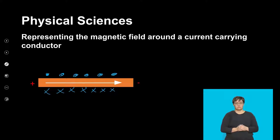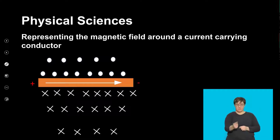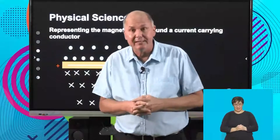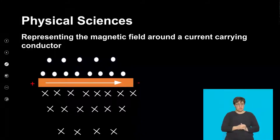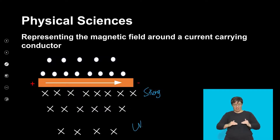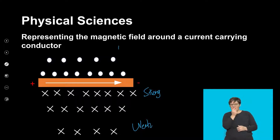In more detail, further away from this current carrying conductor, I've deliberately put the crosses on this side close together — that's a strong magnetic field. Over here they're further apart, representing a weak field. And so they spread out. Even further away, the field would be weak, but close together they'd be strong. It's quite important for you to recognize that.